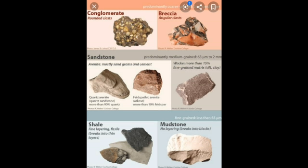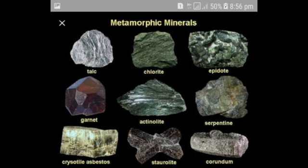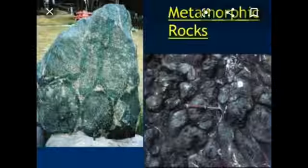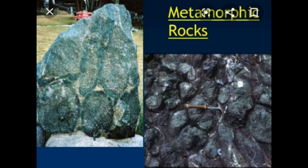Now we will talk about metamorphic rocks. Metamorphic rocks are formed when existing igneous or sedimentary rocks are subjected to extreme heat and pressure. They have ribbon-like layers and a shiny surface. For example, limestone changes to marble, granite to gneiss, clay to slate, and sandstone to quartzite. Thus, marble, slate, and quartzite are metamorphic rocks.